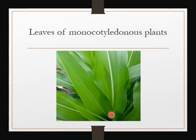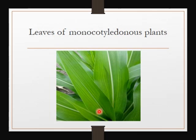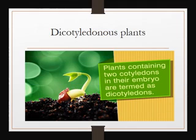They are parallel — this is what we call parallel venation. Another thing: if you got a ruler and measured the length versus the width of this leaf, you'd see that the length is far greater than the width. So for that reason, we describe them as being narrow. Now we move away from monocotyledonous plants and move to dicotyledonous plants.